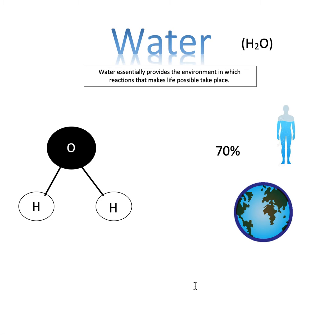In this video I'll be teaching you about water and why it's so important for life on earth, and all of the unique characteristics that water has. If you're here just for the IB questions, check the description for where to skip to. Water is displayed as H2O — the H2 implies two hydrogens and one oxygen — and this is its basic chemical structure.